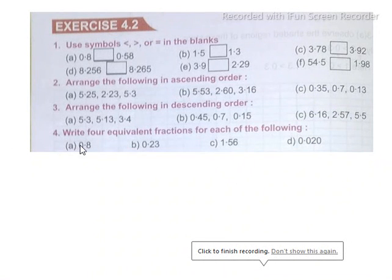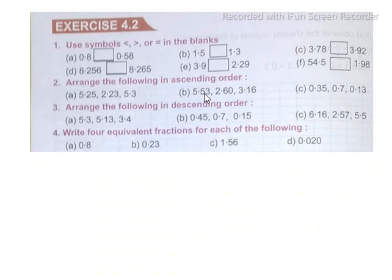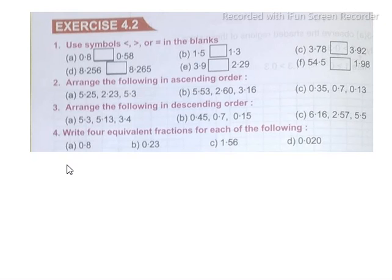Question number two, exercise 4.2: arrange the following in ascending order. The numbers are 5.25, 2.23, and 5.3. Which is the greatest decimal number? 5.3 is the greatest. The smallest is 2.23. So the first number in ascending order is 2.23, the second number is 5.25, and the third number is 5.3.